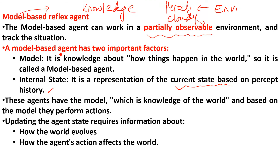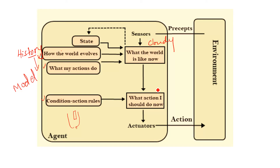Model-based agents have two important factors. First is the model — knowledge about how things happen in the world. Second is the internal state — the representation of the current state based on percept history. Sometimes we do not have prior history for a situation, so we use our current knowledge to make a decision, but we keep that information in mind for future reference. Updating the agent state requires information about how the world evolves and how the agent's actions affect the world. I hope the concept of model-based reflex agents is now clear.